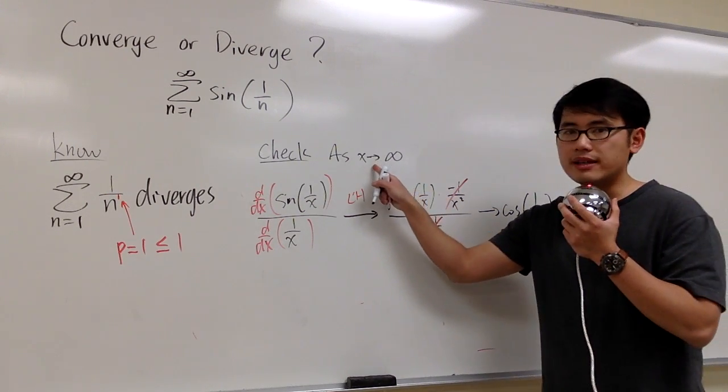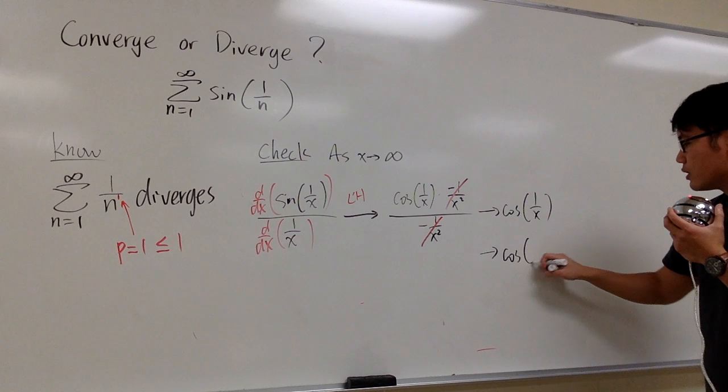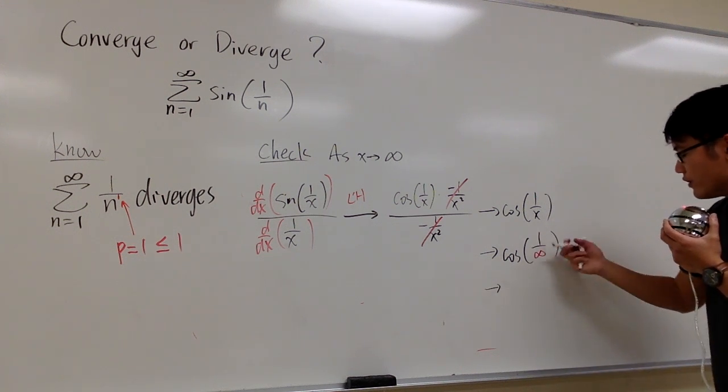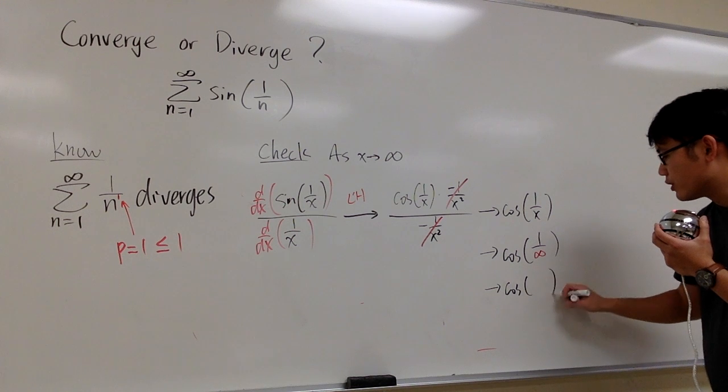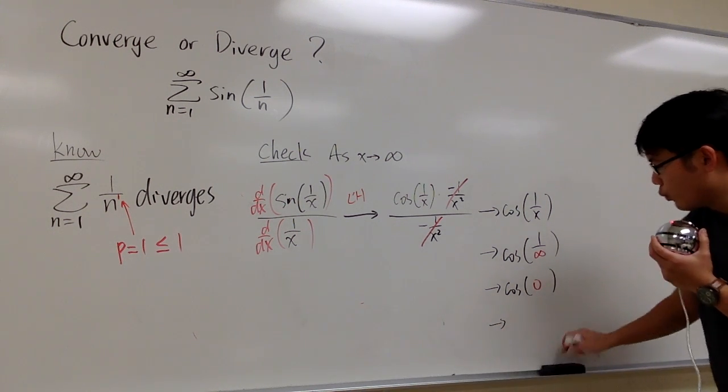And we know that we want x to go to infinity, therefore, we know we are going to say this is cosine of 1 over infinity, and then 1 over infinity, once again, is 0, so we are talking about cosine of 0, and therefore, we know this approaches 1.